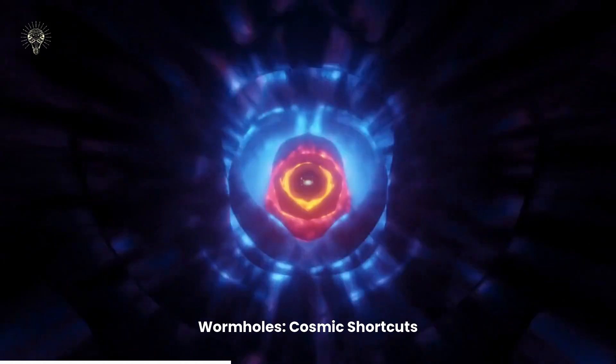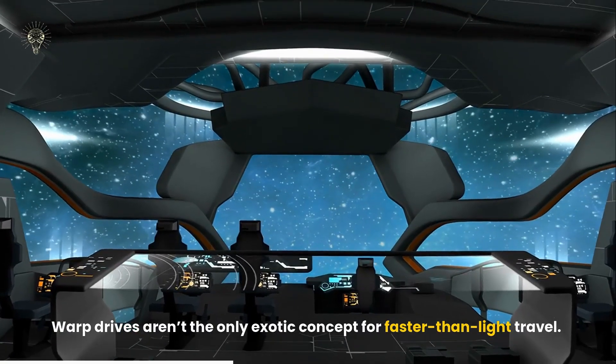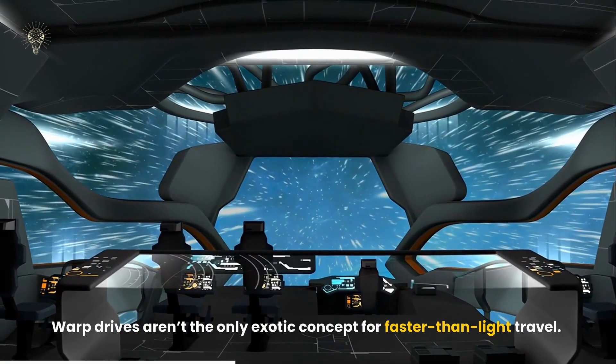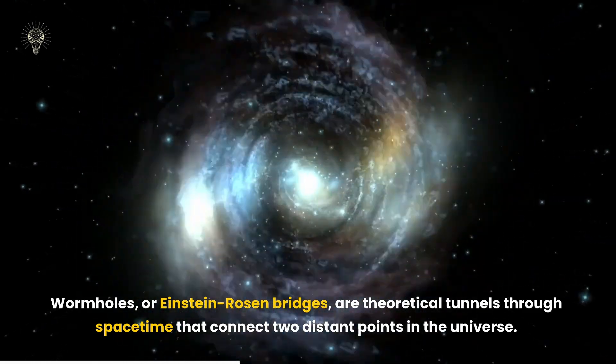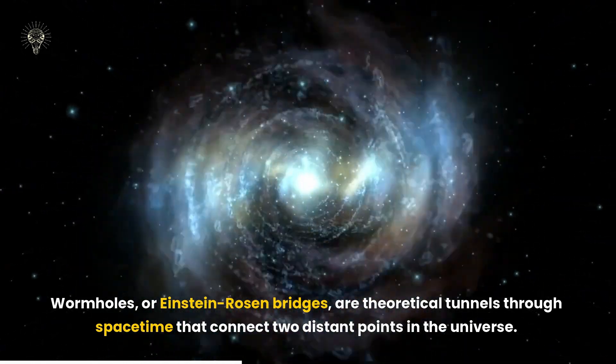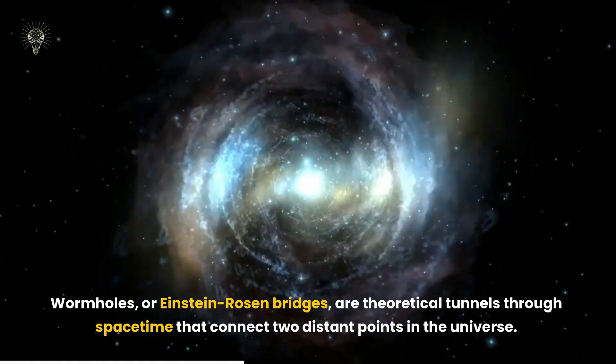Wormholes. Cosmic Shortcuts. Warp drives aren't the only exotic concept for faster-than-light travel. Wormholes, or Einstein-Rosen bridges, are theoretical tunnels through space-time that connect two distant points in the universe.